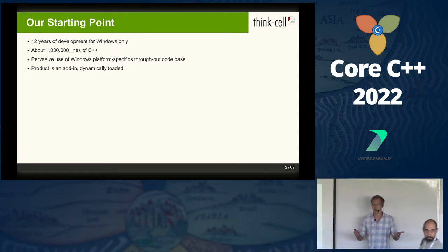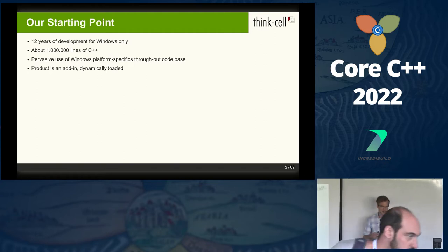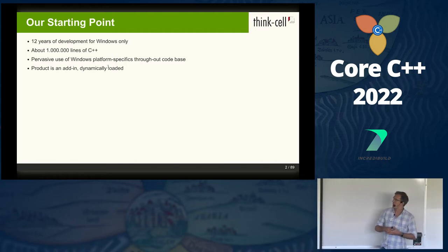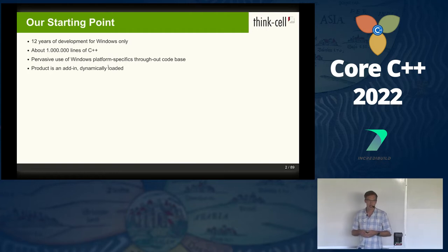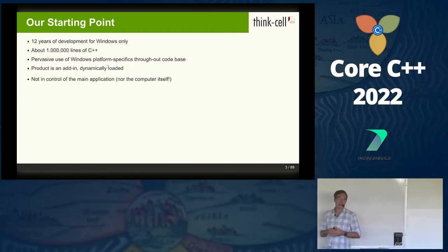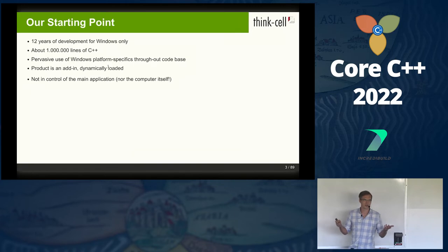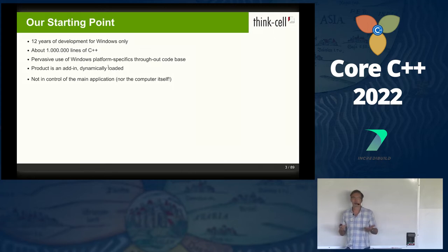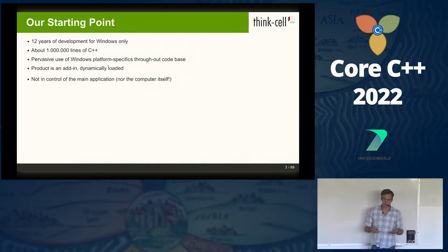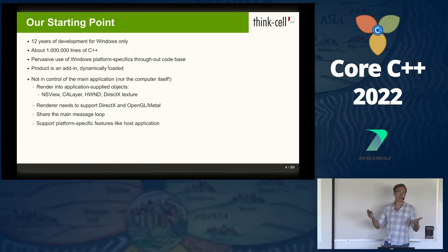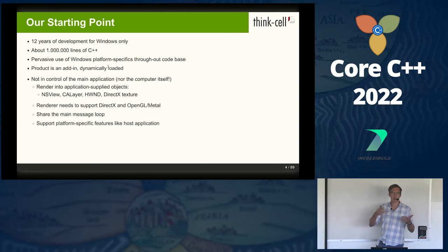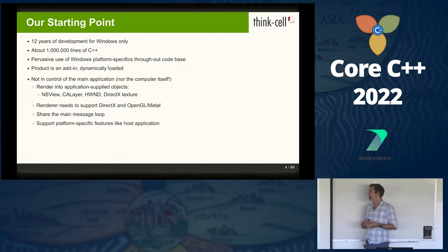We had used Windows data types and Windows APIs throughout our entire code base — we never knew it was going to be a cross-platform application when we started around 2000. Our product is an add-in, which makes matters more interesting because we are dynamically loaded and not in control of the main application. Unlike server applications, we're not in control of the computer itself either — we're running in arguably the most hostile environment: a desktop system. That means we have to be very flexible. We needed a very flexible renderer that could render into anything the main application gives us — views, animation layers on macOS, or window handles and textures on Windows.